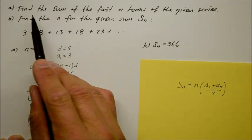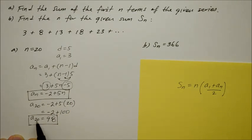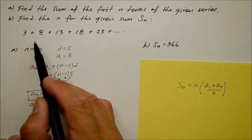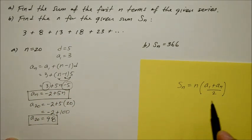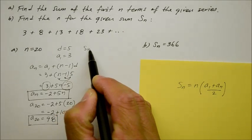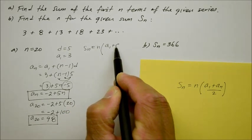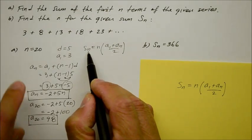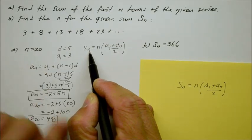But the direction is to find the sum of the first n terms — the sum of the entire first 20 numbers of the sequence, or the series of numbers. We can't just keep going 3 plus 8 plus 13 and so on. We want to use the notation that was generated. So to find that, we use s of n equals n times the average of the quantity a sub 1 plus a sub n.